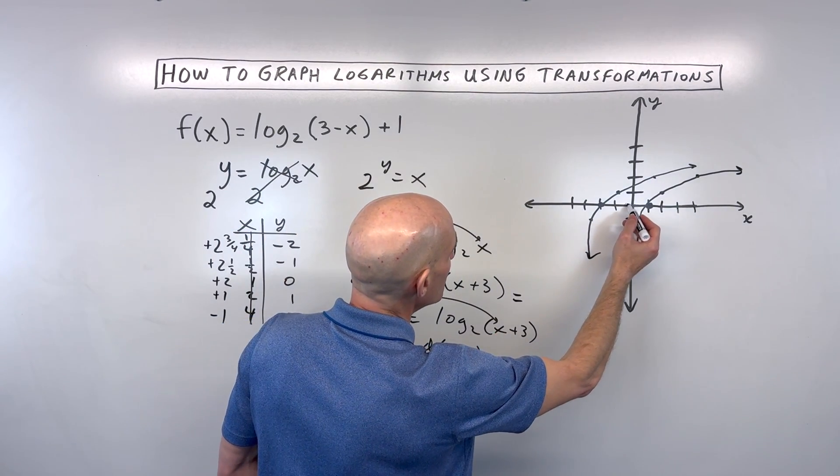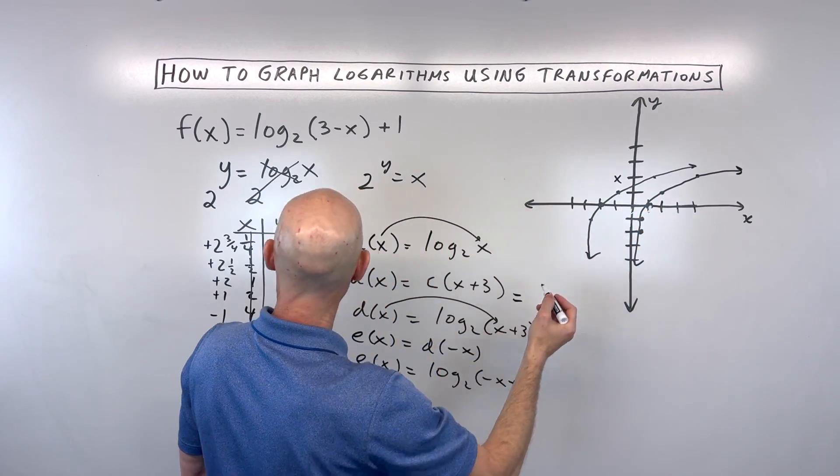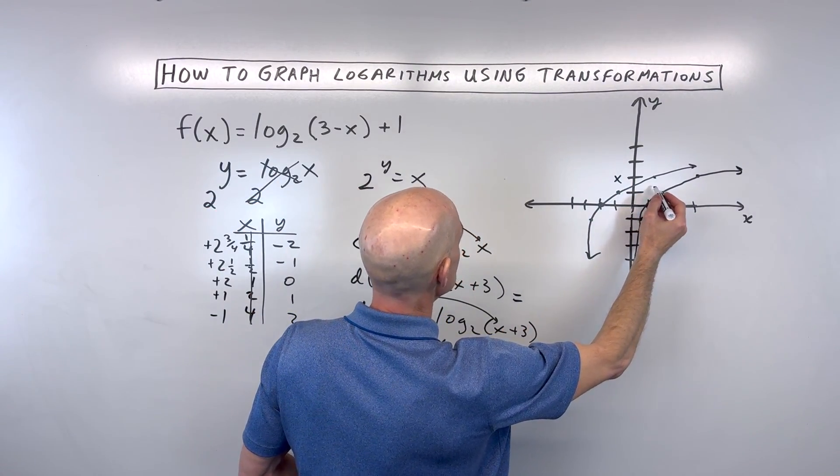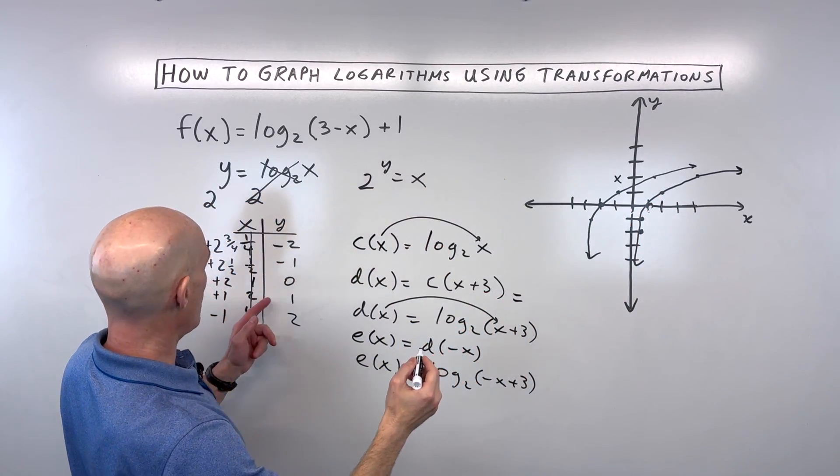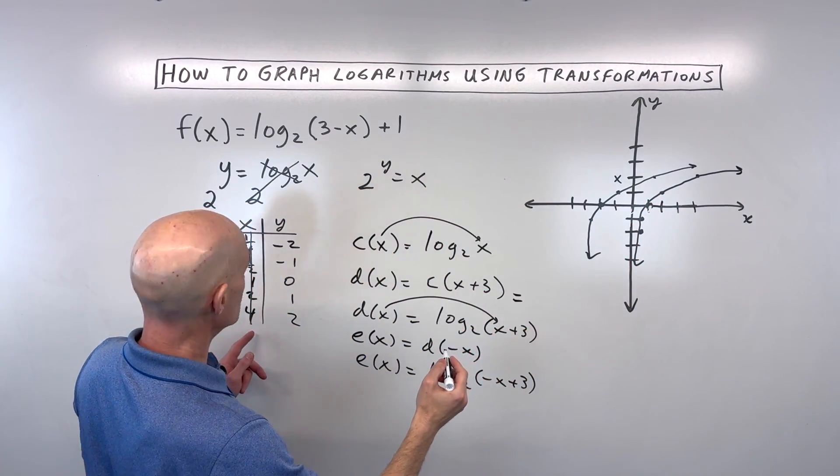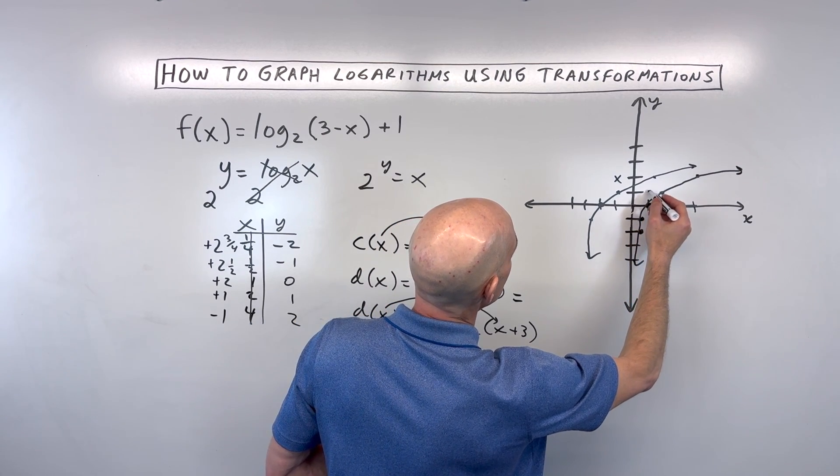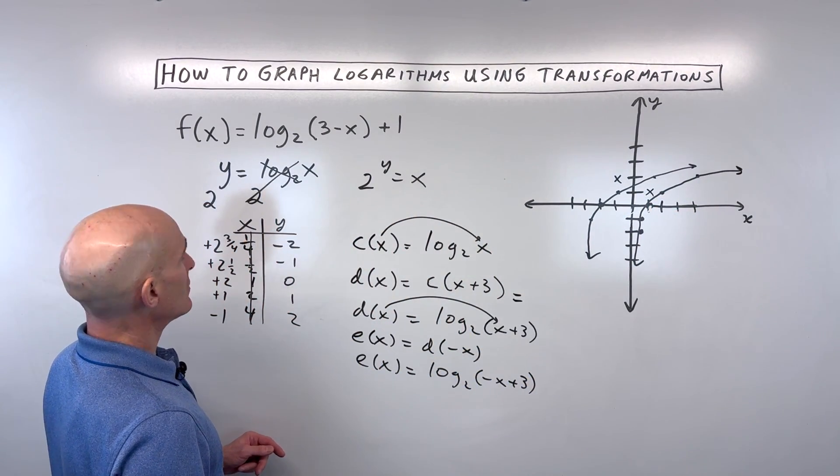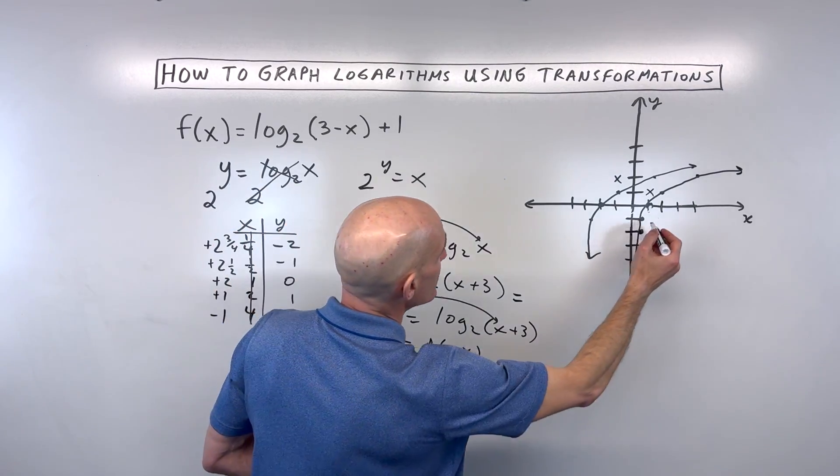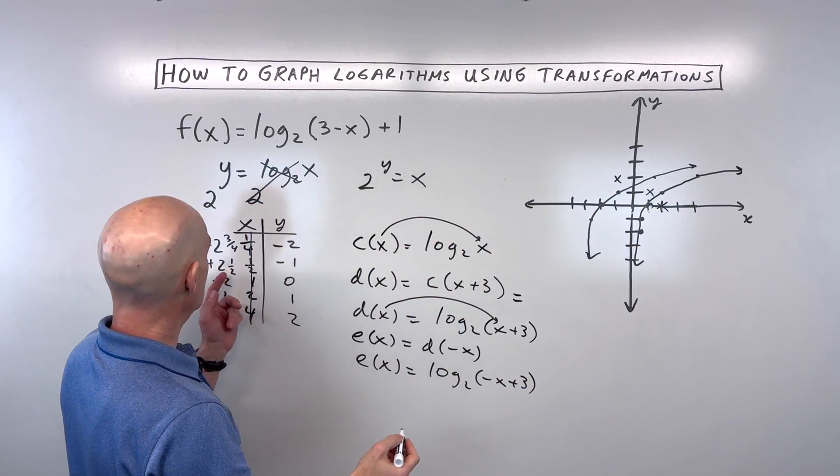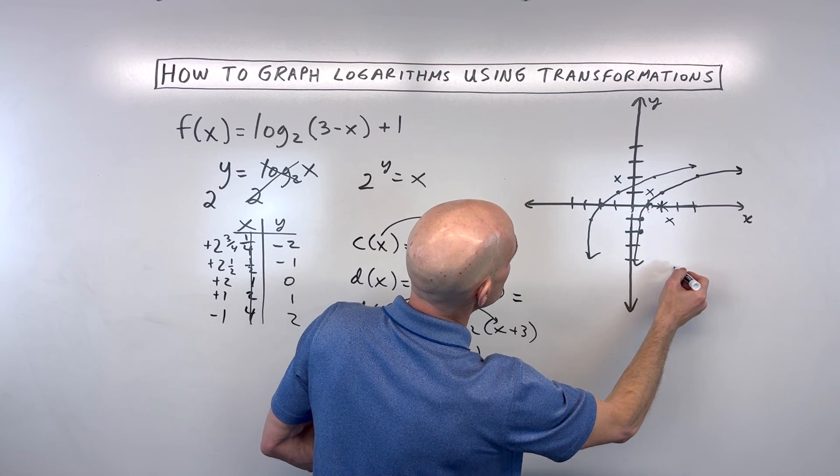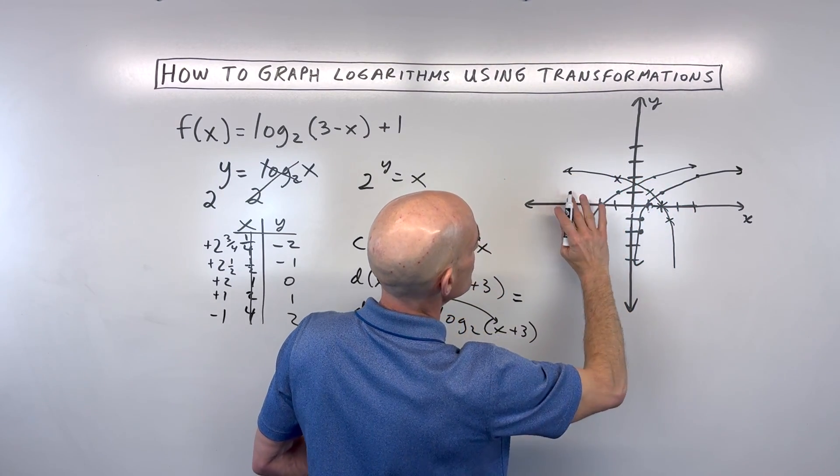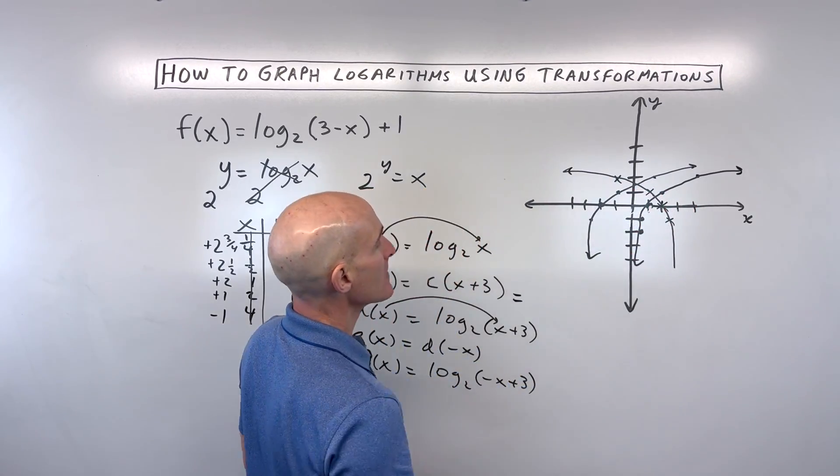So negative 1, 2 is going to be right here. And 1, 1 is going to be right here. And 2, 0 is right here. And 2 and a half negative 1 is right here. So you can see what's happening. This graph is going like this now. We reflected it over the y-axis.